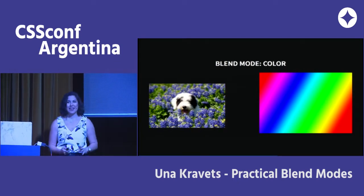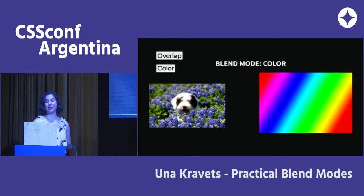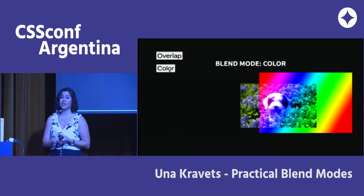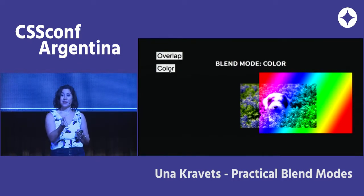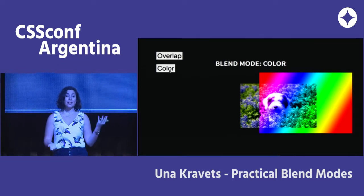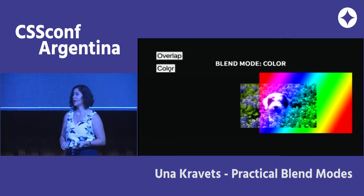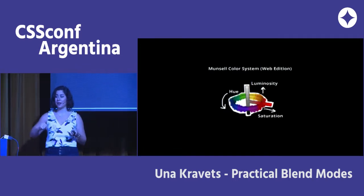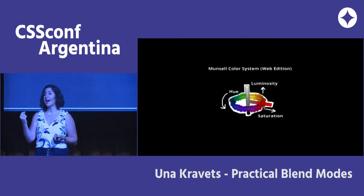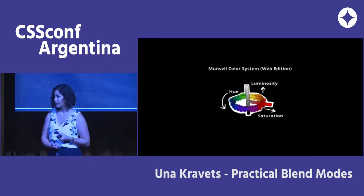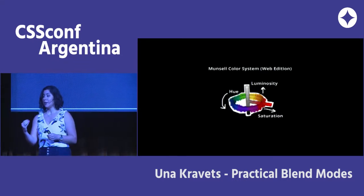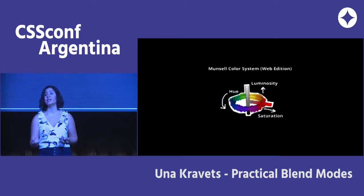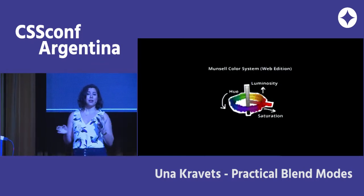The color blend mode takes the hue and saturation values of the active layer and applies them to the luminosity of the image behind it. The image behind could be black and white — it wouldn't matter. Looking at the HSL color ring: luminosity is your dark-to-light value, hue is the shade on the color wheel, and saturation is how far from 50% gray. These are all individual blend modes — you can apply just luminosity, just saturation, or just hue of a color or gradient to an image.